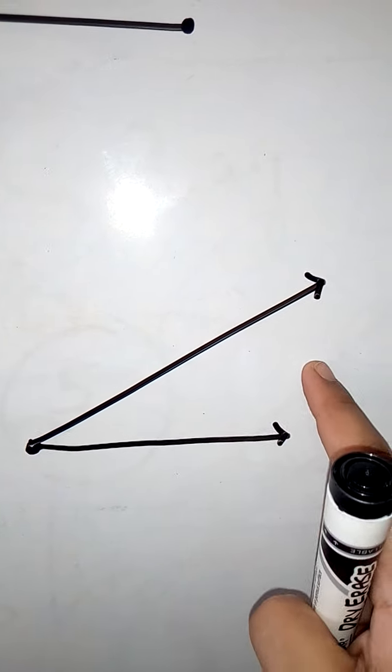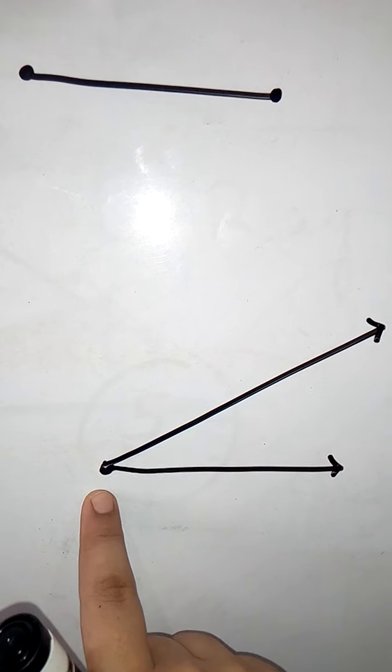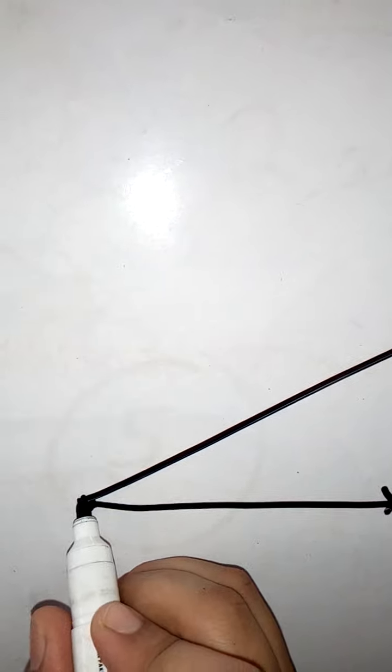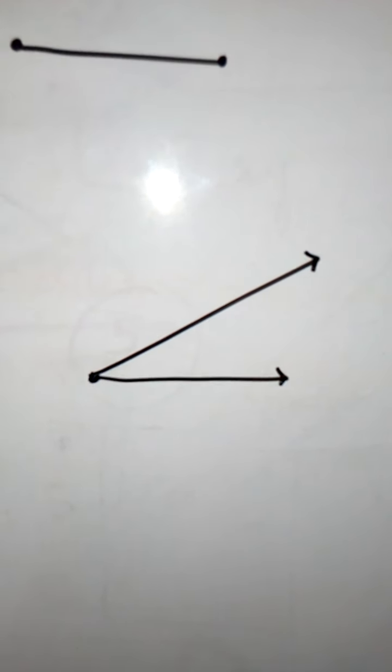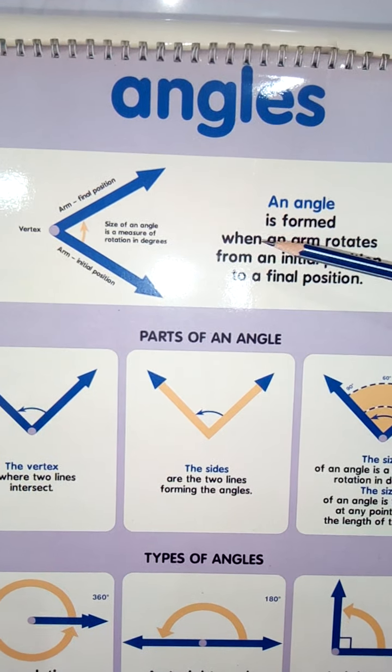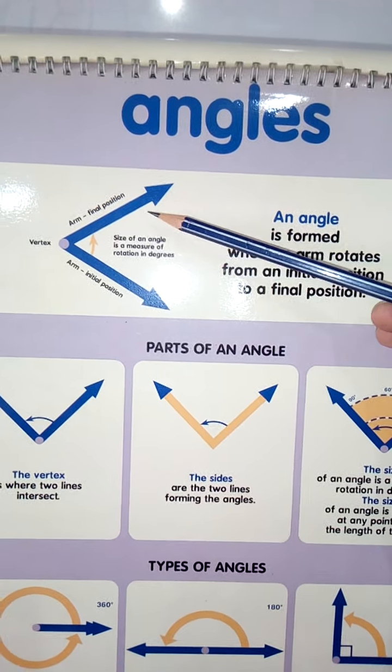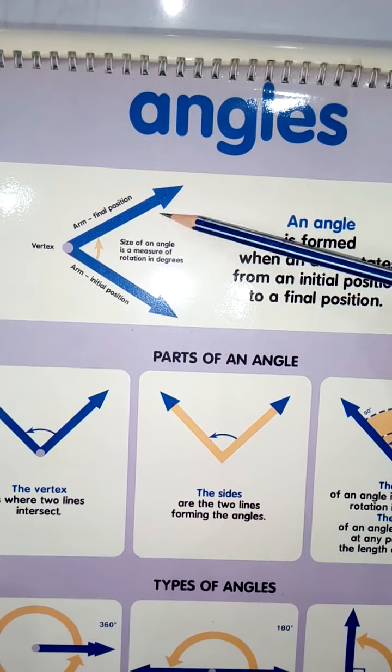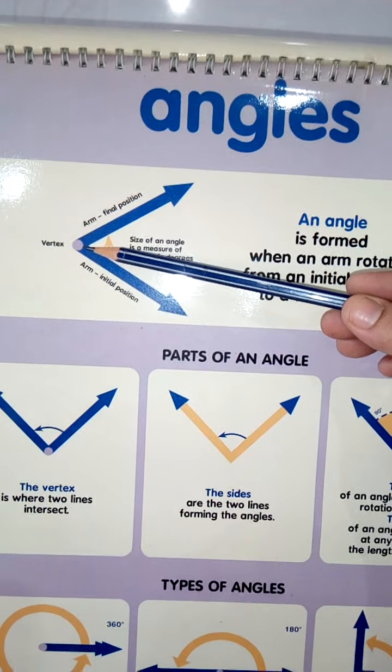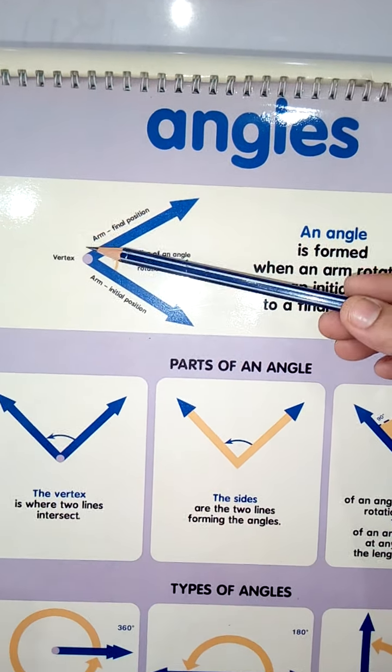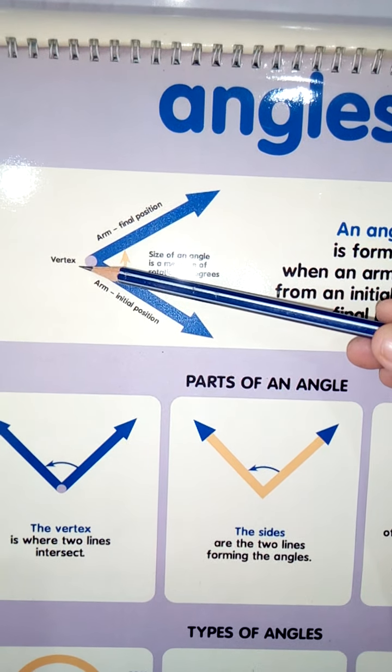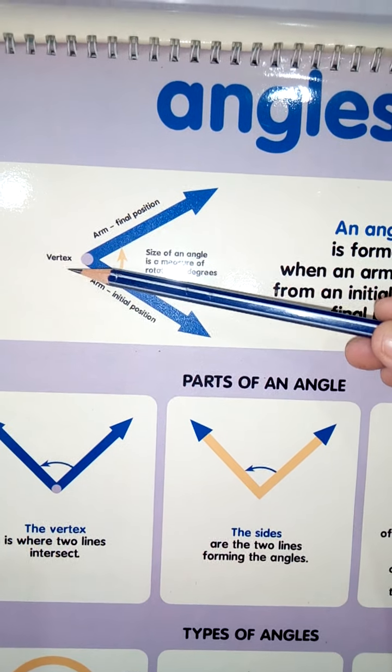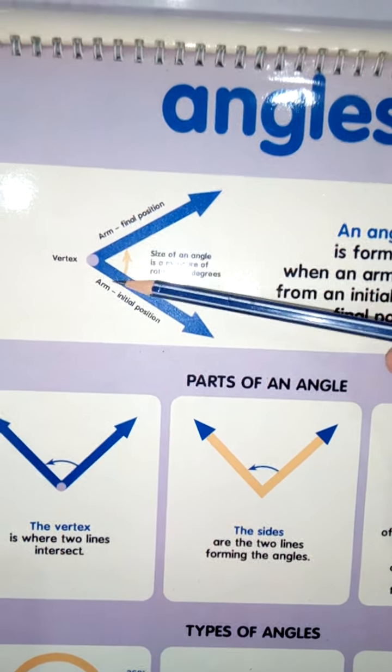What I did? I joined two rays together sharing one common end point. This one common end point has a special name. We call it vertex. V-E-R-T-E-X, vertex. This point is known as vertex because over here we are joining these two rays together.